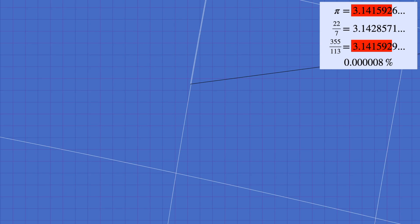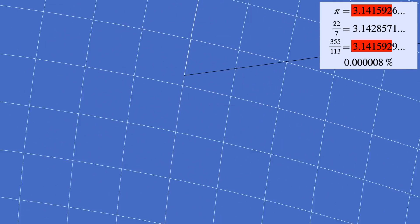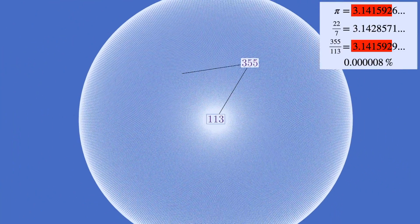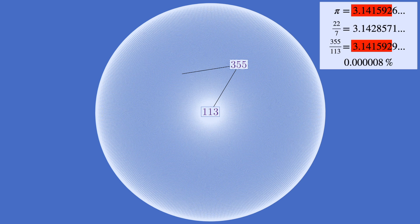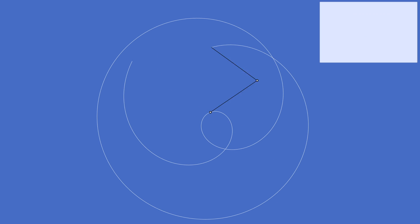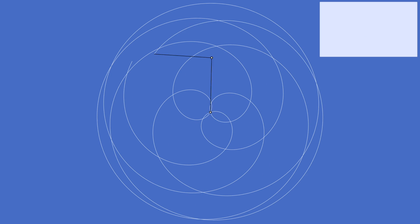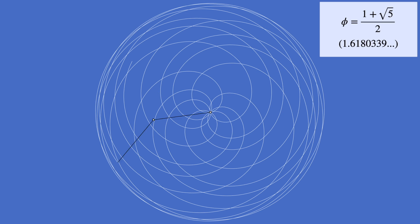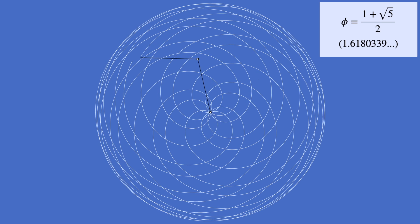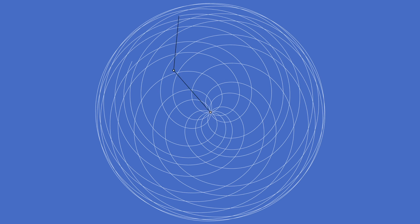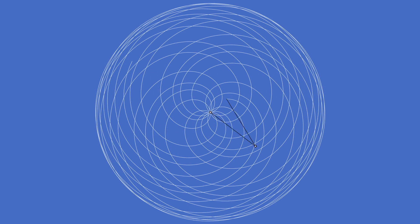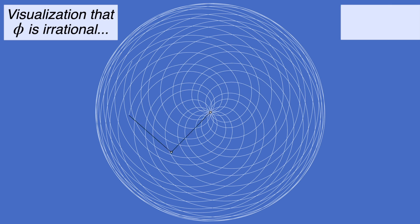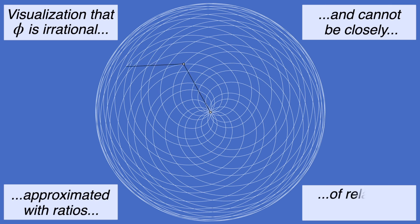We can of course use any other number, rational or irrational, as the ratio between the two rates of rotation to generate different patterns. For a little contrast, let's look at the pattern generated by the irrational number that's hardest to approximate with ratios of small integers. As some of you may know, that would be one plus the square root of five over two — the golden ratio, commonly represented by the Greek letter phi.